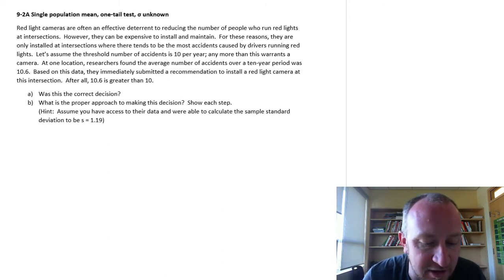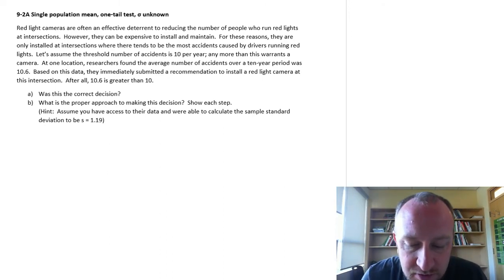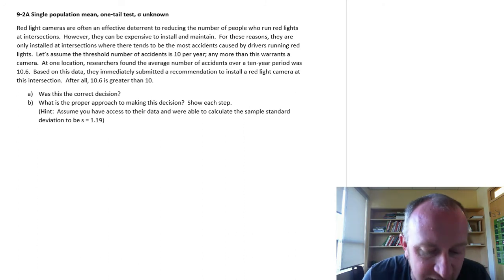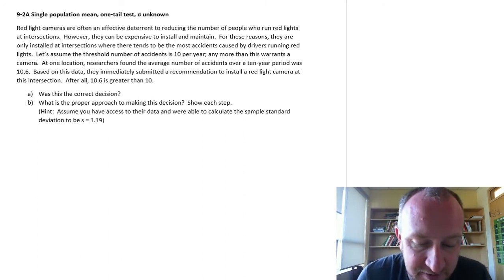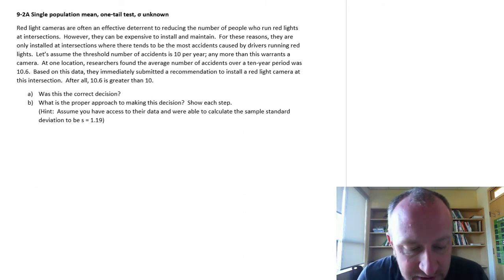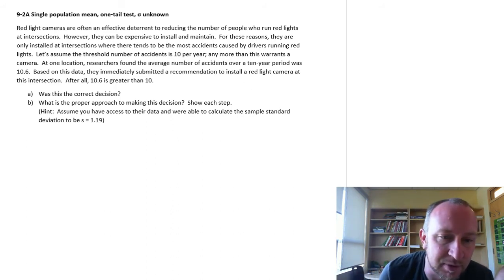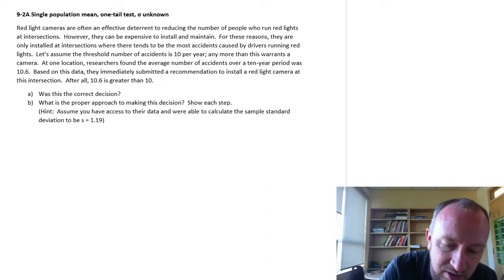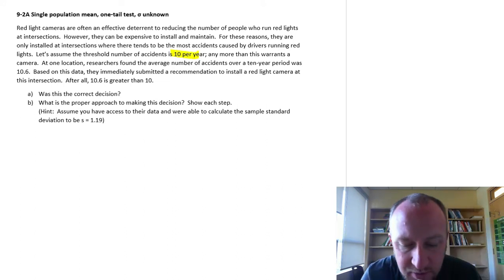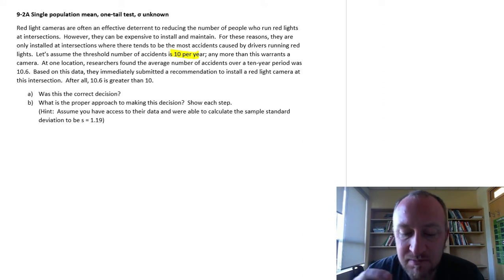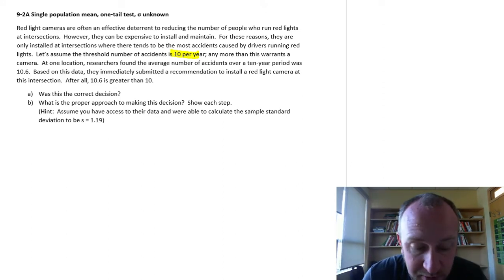Red light cameras are an effective deterrent to reducing the number of people who run red lights at intersections. However, they can be expensive to install and maintain. For these reasons, they are only installed at intersections where there tends to be the most accidents caused by drivers running red lights. Let's assume the threshold number of accidents is 10 per year, and here I'm just going to highlight what might be important information. Any more than this warrants a camera be installed.